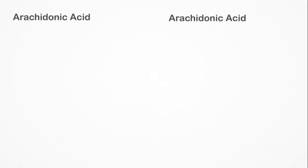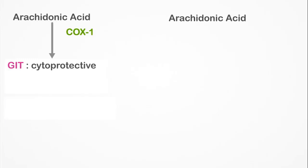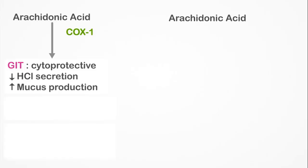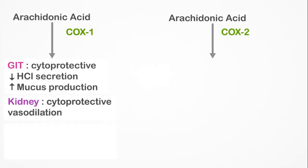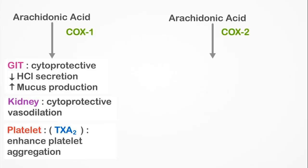Now we will review the physiological roles of the COX-1 pathway. In the gastrointestinal tract, otherwise known as the GI tract, COX-1 plays an important cytoprotective role. It keeps the production of gastric acid low and increases the protective mucus production. In the kidney, COX-1 mediates the vasodilation of renal blood vessels. In platelets, thromboxane A2 produced via the COX-1 pathway induces platelet aggregation.